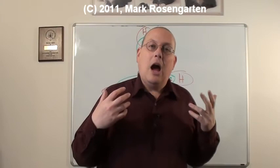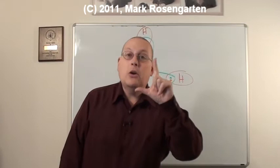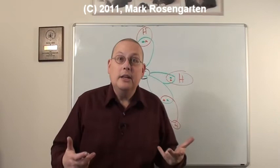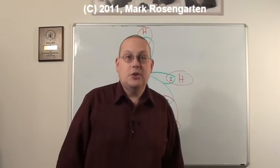So oxygen's two lone pairs are the reason why water is bent. And because water is bent, it melts and boils at a much higher temperature than it normally would. And thanks to those two lone pairs of electrons, water is a liquid at room temperature. If it wasn't, life wouldn't exist as we know it.